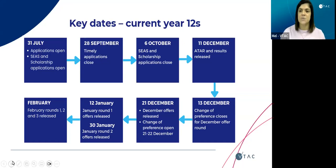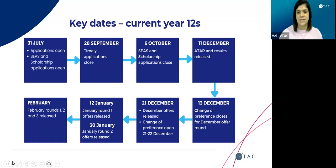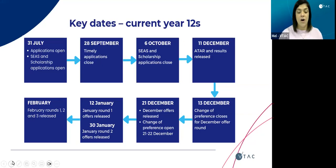On the 11th of December is when ATARs and results are released. The change of preference closes again on the 13th of December for those December round offers. The first round of offers for current Year 12s will be made on the 21st of December. And then the change of preference will open for 24 hours between the 21st and 22nd of December. There will be subsequent offer rounds in January and February.